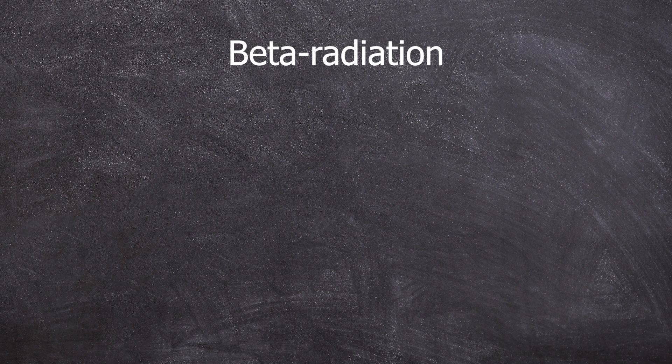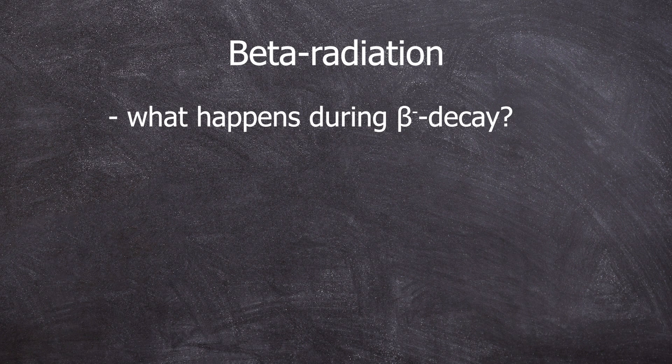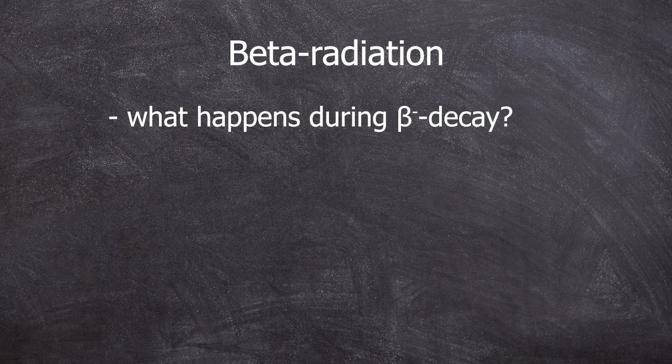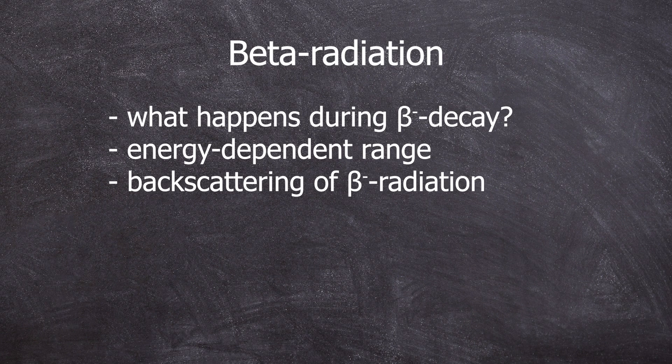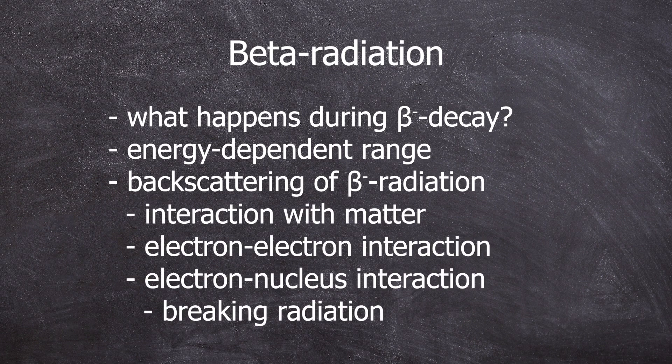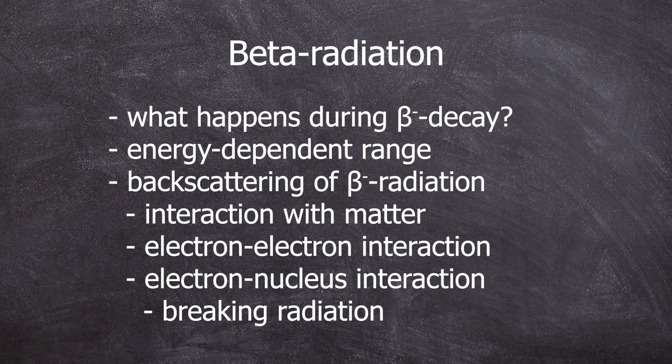Beta radiation. Today we are focusing on some interesting experiments to demonstrate the properties of beta minus radiation. First we should clarify what happens during a beta decay so we can explore some characteristics of the resulting beta radiation. We'll conduct an experiment on the energy-dependent range of beta radiation and then move on to one about the backscattering of beta radiation. I'll use the backscattering as an opportunity to discuss potential interactions between beta minus radiation and matter.